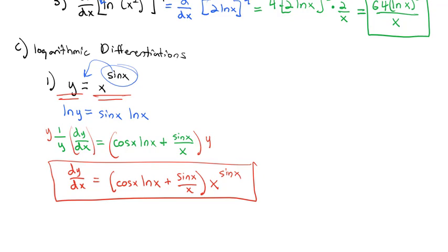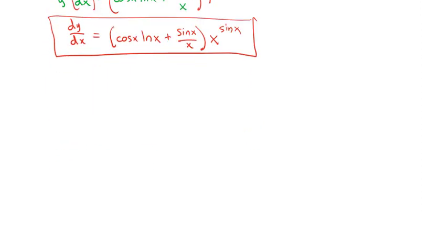Logarithmic differentiation was very helpful on these problems that would otherwise be impossible. In addition, it gives us a much easier way to find dy/dx when y equals something like e to the x times sine of x over the square root of x times the natural log of x. We could use the product rule in the numerator and denominator within the quotient rule, but that would be a huge expression to simplify.